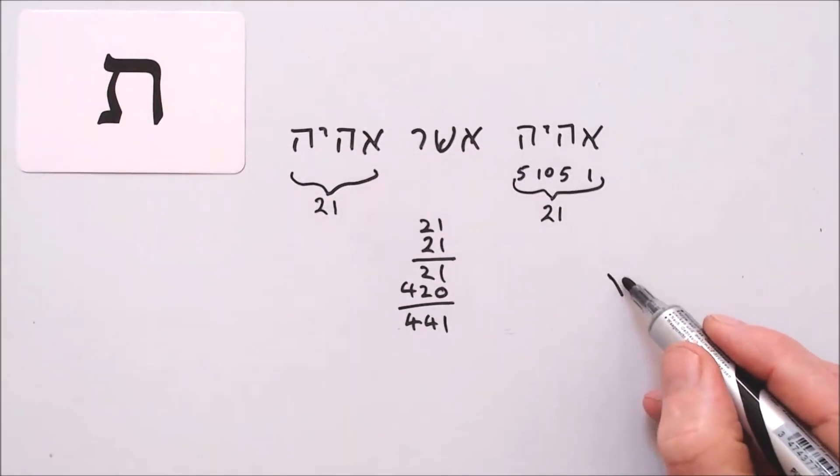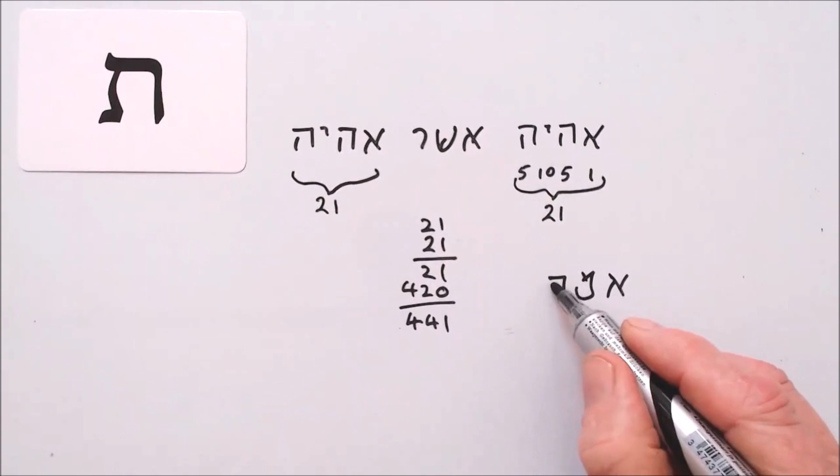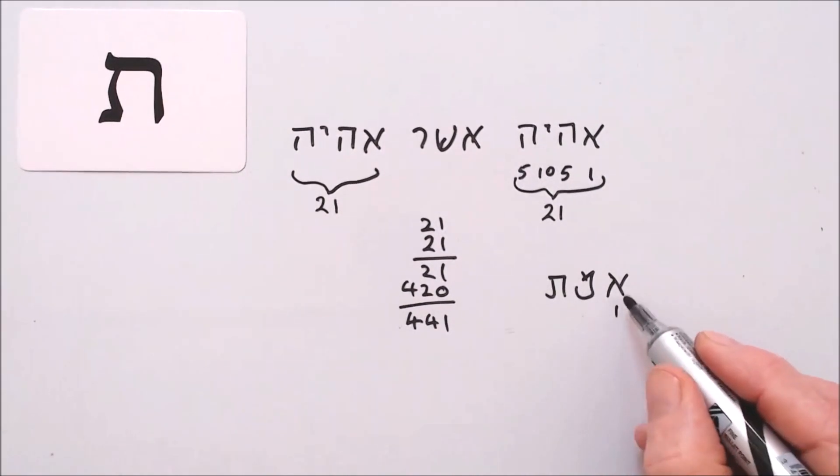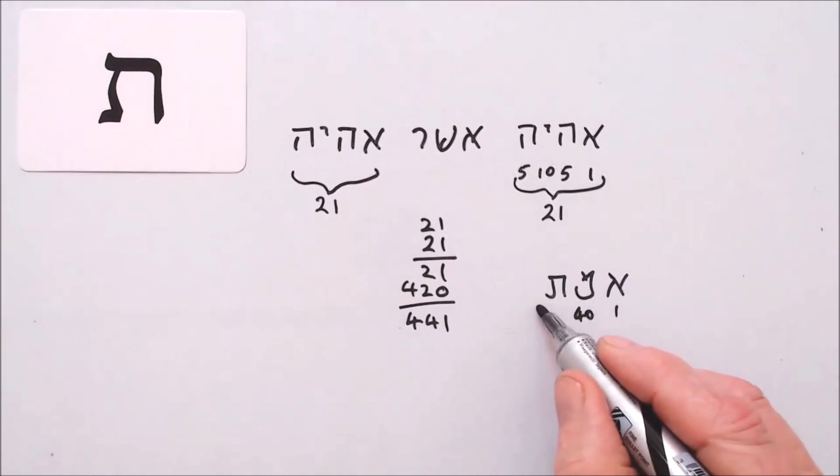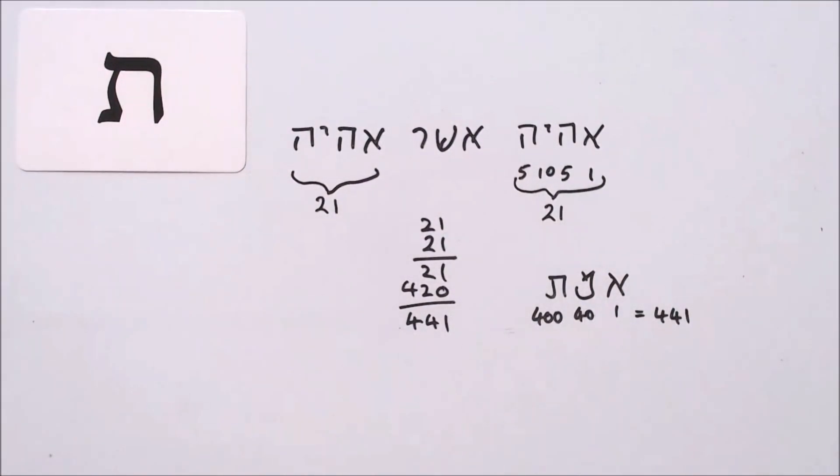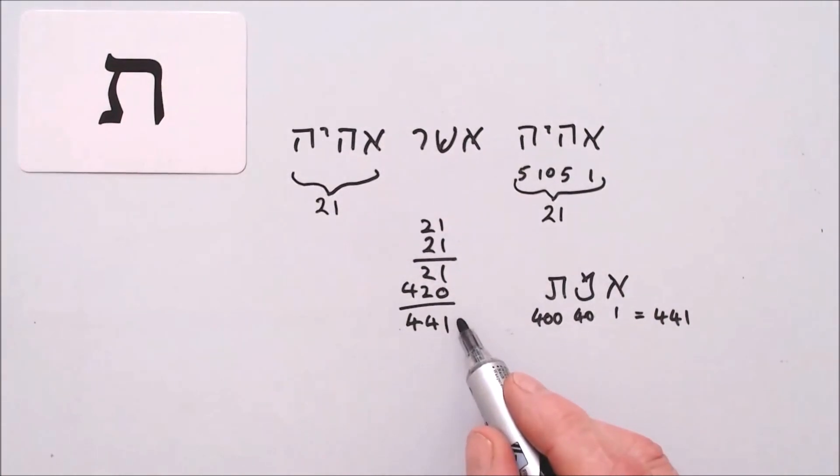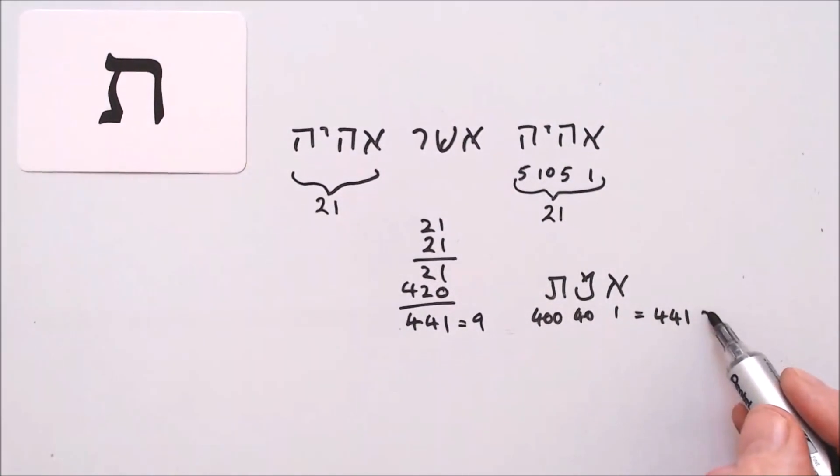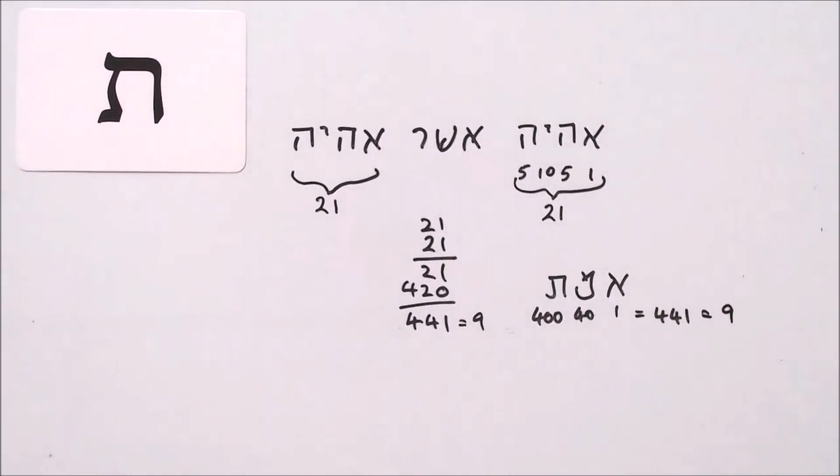If we multiply them together, and that just happens to be the numeric sum of Emet, which is one, forty, four hundred, four forty-one. And both of course have a digit sum of, if you want to get the digit sum, four plus four is eight, plus one is nine. Same there, nine. Truth, truth, truth. The God of truth had and has a bond with Israel, which remains firm and true to this day. His bond with us is equally unbreakable.